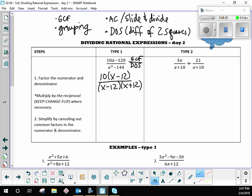So then this part of step one says multiply by the reciprocal, or keep change flip, where necessary. It is not necessary when you have only one fraction. I'll explain that when we get to type two. So right here, we will. So right here for this part of step one, just put N-A.